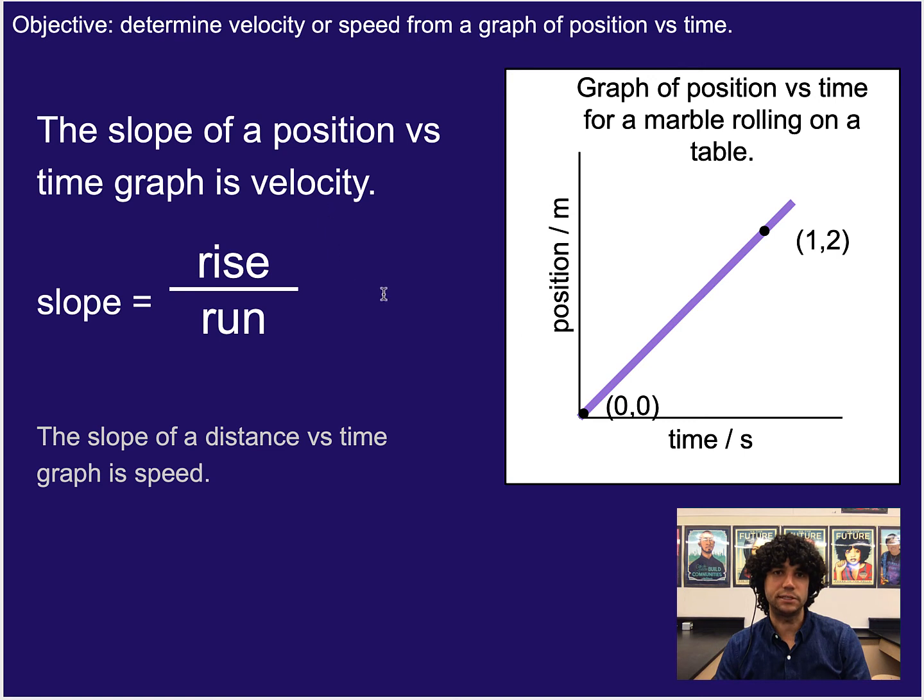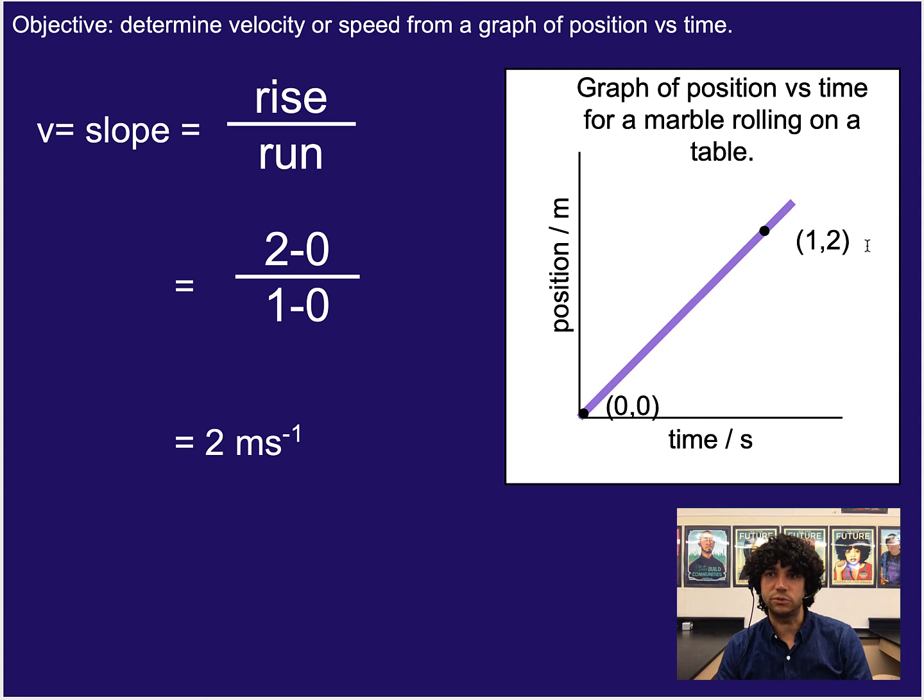So here what that means is on a position-time graph, if we look at rise divided by run, or change in position divided by time, that really is the same as doing distance or displacement divided by time. And so as a result, what we get is that the slope from this line is going to be our velocity of the marble rolling on a table in this case. So we could plug in and calculate 2 minus 0, so we get the change in y, 2 minus 0, divided by the change in x, 1 minus 0. And so our velocity or speed would be 2 meters per second, where the 2 and the 0 were in meters, and the 1 and the 0 were in seconds. And so that's how we get meters per second.